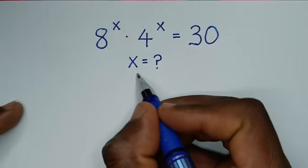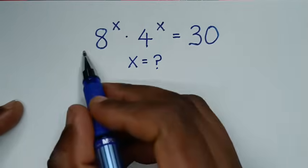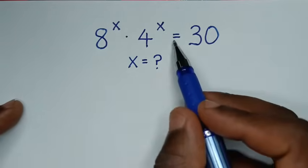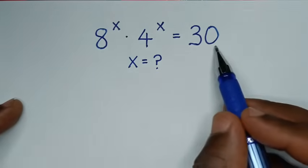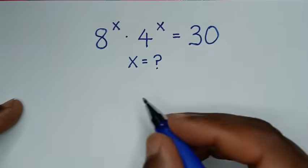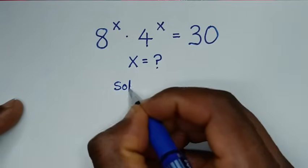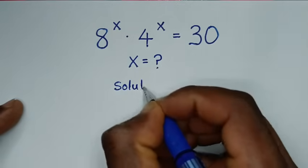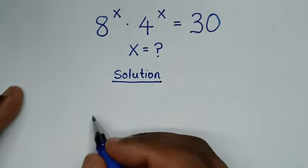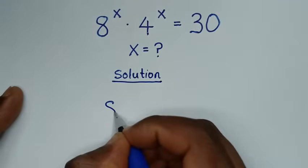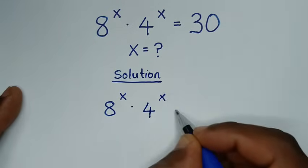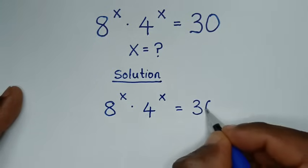Hello, you are welcome to solve this math problem which is 8 power x times 4 power x is equal to 30, to find the value of x from this equation. From our problem which is 8 power x times 4 power x is equal to 30.